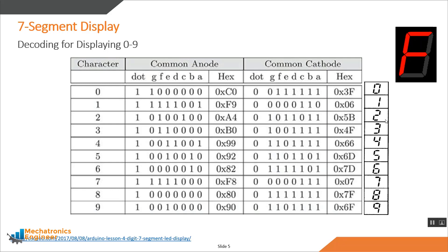For example, to display the number two, LED segments A, B, D, E, and G must be turned on while F and C remain off. For common cathode type we implement positive logic, meaning we apply logic one to the segment we want to illuminate. For common anode type we implement negative logic, meaning we apply logic zero to the segment we want to illuminate.